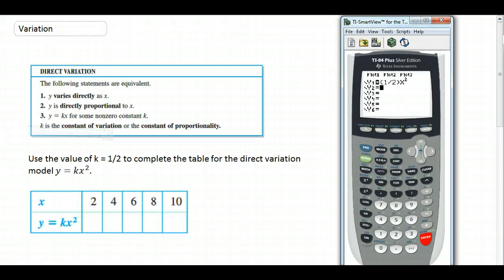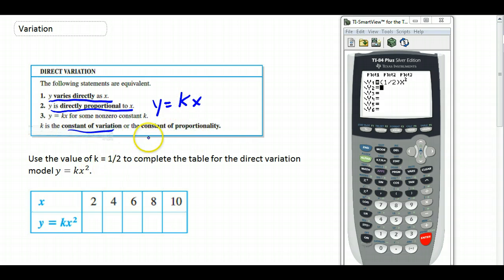All right, so now let's talk about a particular kind of mathematical modeling called variation. Direct variation means that Y varies directly as X, which is the same thing as saying Y is directly proportional to X, which is the same thing as saying that Y equals some constant times X. And K is called the constant of variation or sometimes called the constant of proportionality.